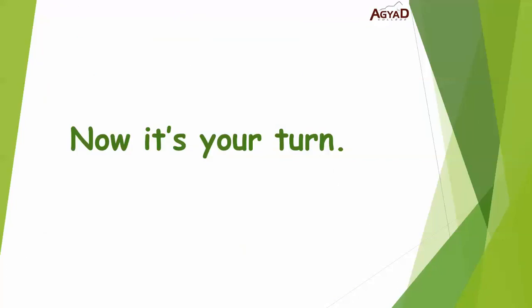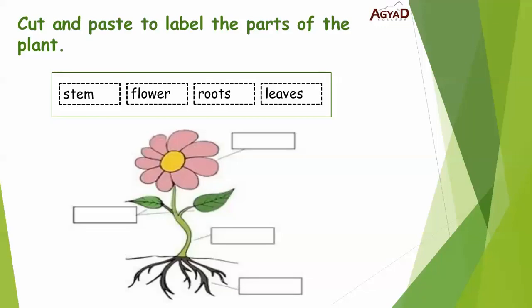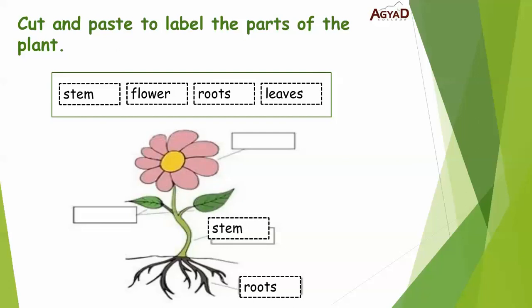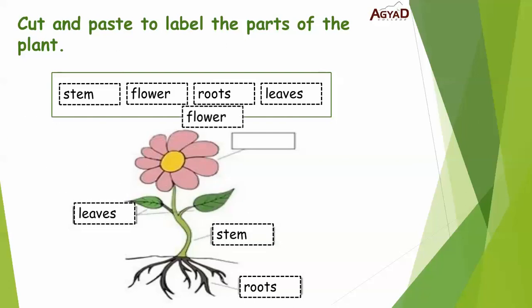It's your turn to apply on the parts of the plant and what does it need. Let's cut and paste to label the parts of the plant. We have stem, flower, roots, leaves. These are roots — great job. And this strong part is stem, and these are leaves, and the last one is flower. That's it.